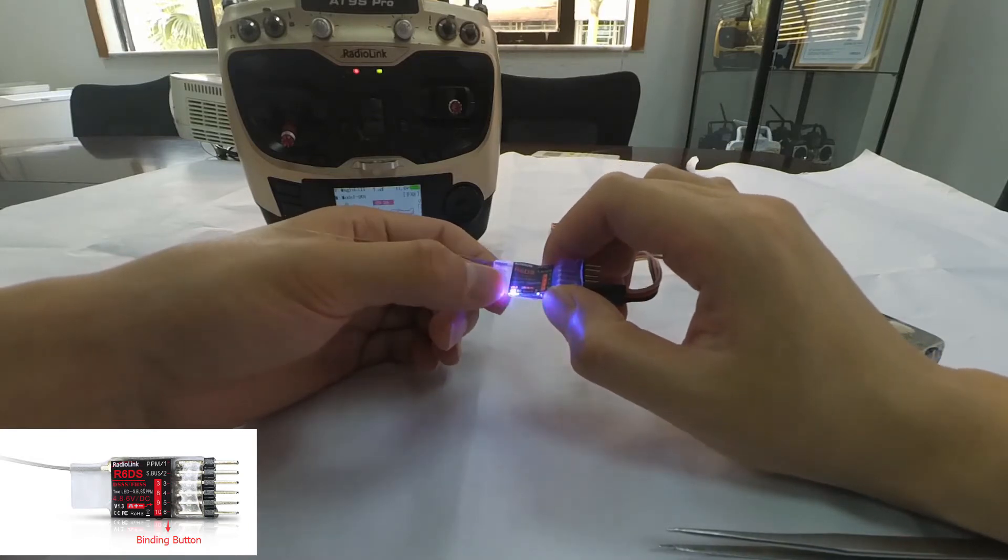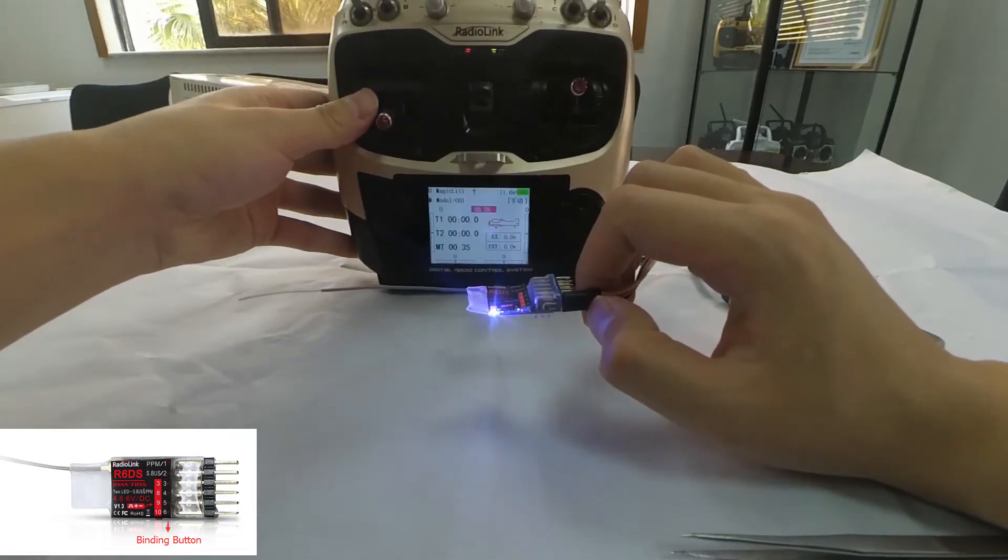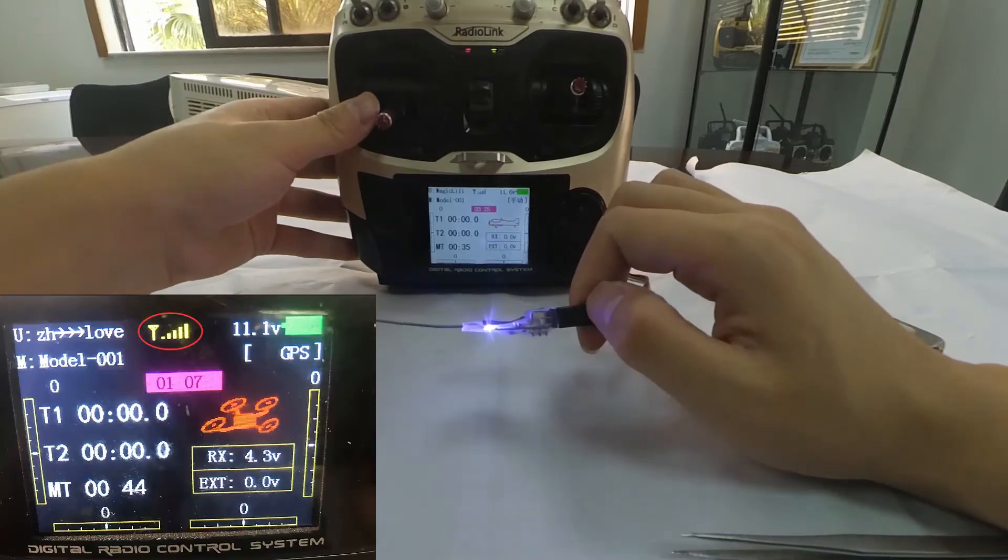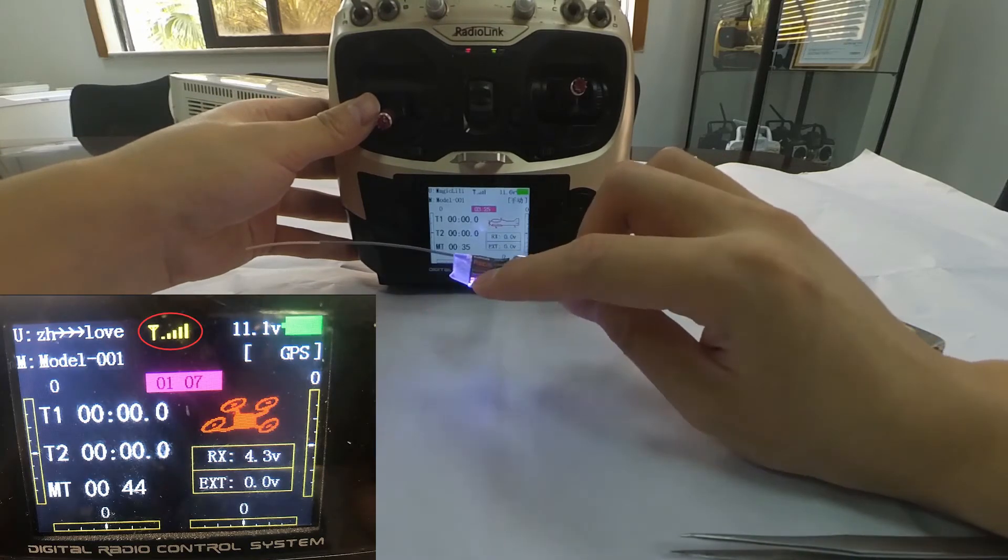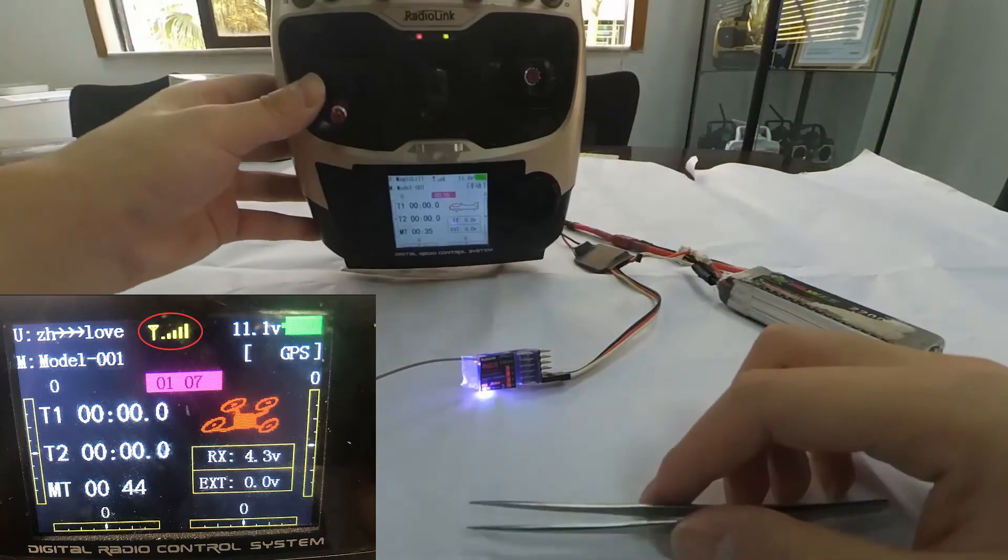When the LED stops flashing and is always on, we can see that a signal tower shows on top of the screen of the transmitter. Binding is complete.